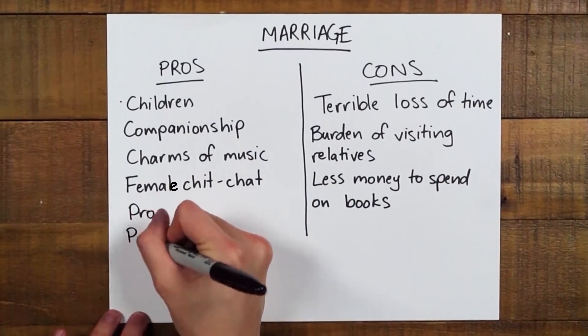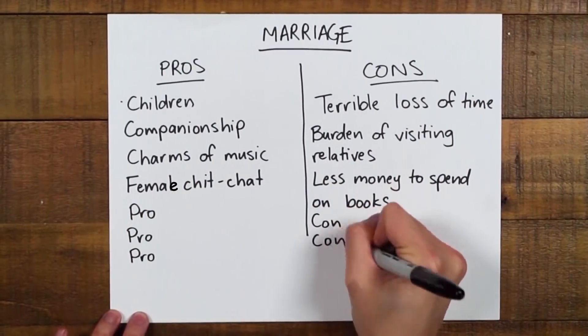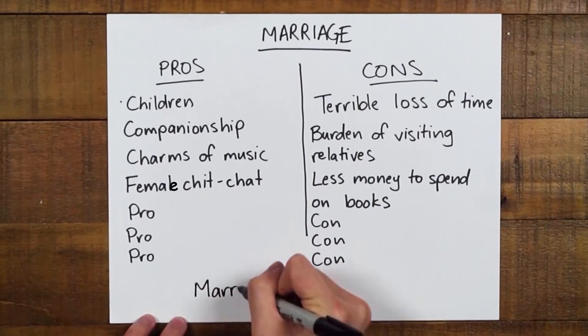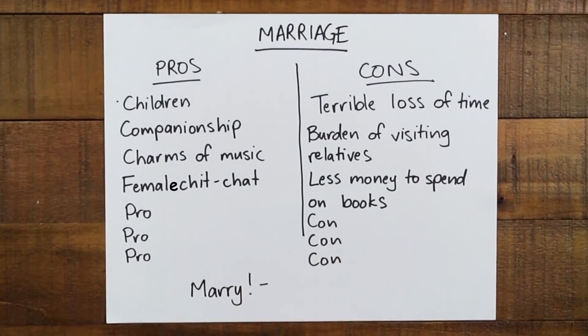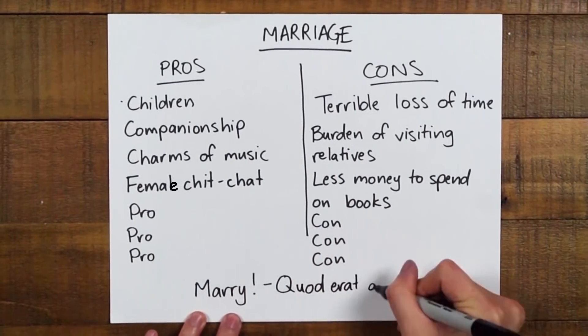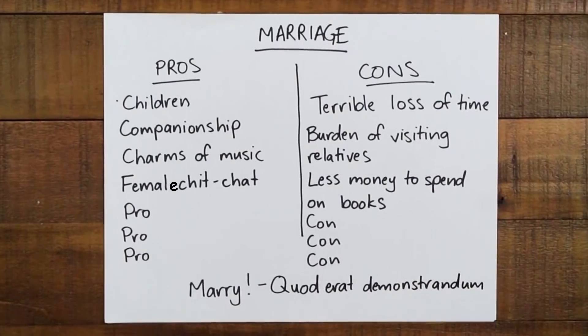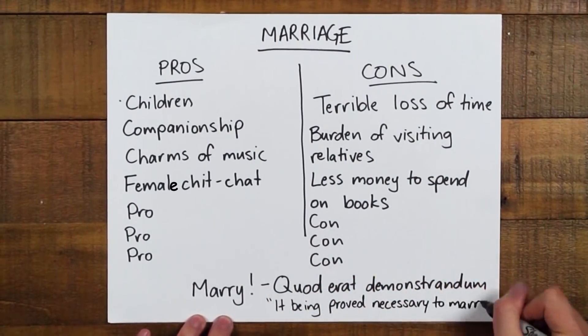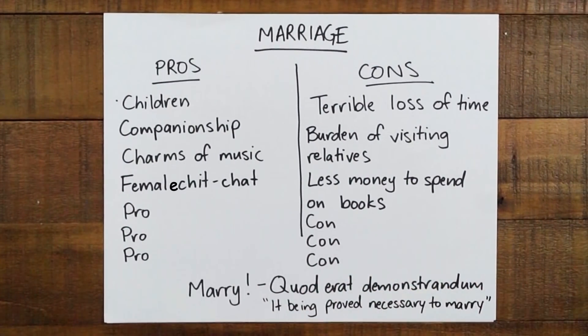The list went on for quite a while, and by a very small margin, he decided to marry — signing off "quod erat demonstrandum," Latin for "it being proved necessary to marry." What a lucky girl.